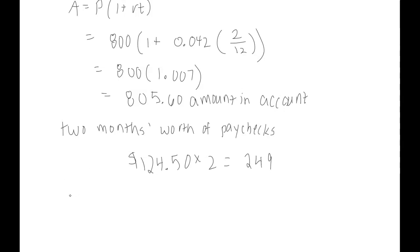So then the total amount of money she will have after two months is that $805.60 in her account, plus the $249 that she's made. So in total, she will have $1054.60. So the answer is yes, she can purchase her one wheel after two months worth of paychecks. She will have $4.60 to spare.